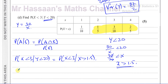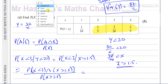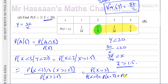So P(X < 3 | Y < 20) is the same as P(X < 3 | X > 1.5). This equals P(X < 3 ∩ X > 1.5) divided by P(X > 1.5). The intersection — values less than 3 and greater than 1.5 — since X is discrete, greater than 1.5 means X = 2, 3, or 4, so the intersection with X < 3 gives only X = 2.